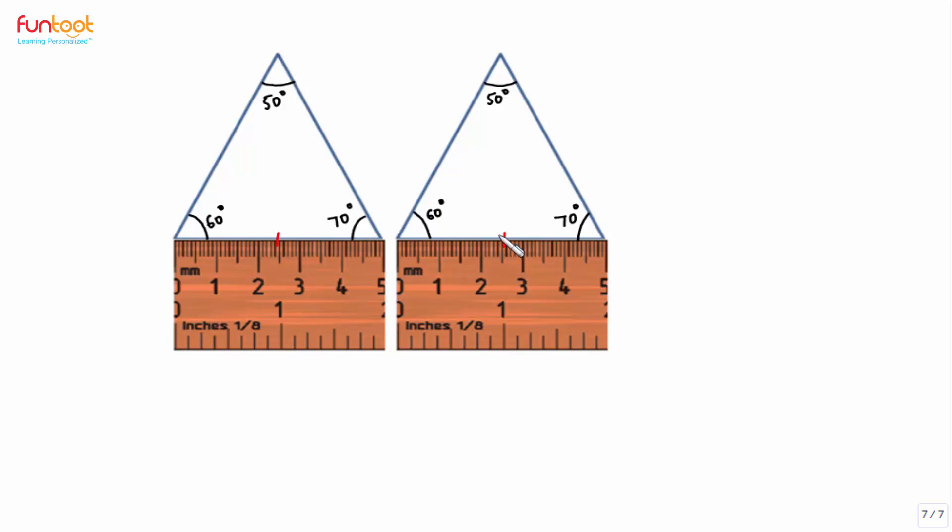Now in these two triangles, this side is equal to this side, this angle is 60 degrees and this angle is also 60 degrees.